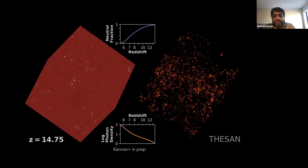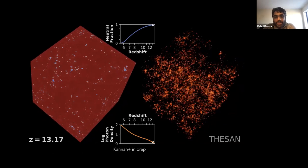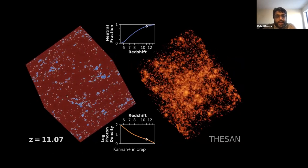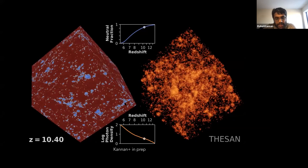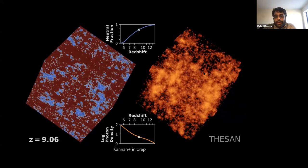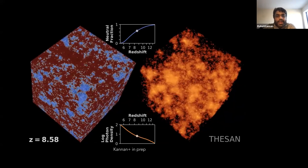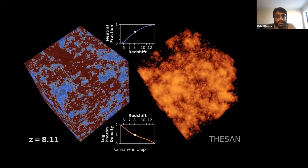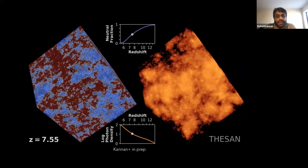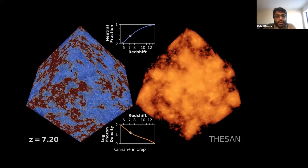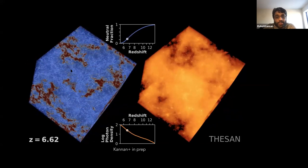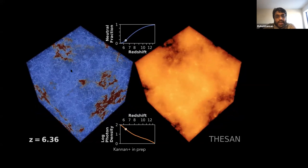Here is a movie showing how the ionization process proceeds in the THESAN simulation. On the left is the ionization field, and on the right is the photon density field. Anything blue is ionized and red is neutral. You can see how these ionized regions percolate throughout the volume as time progresses.